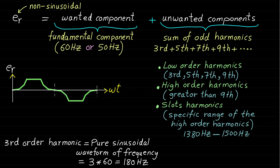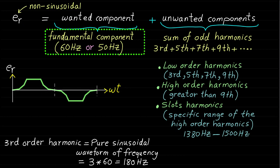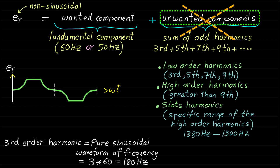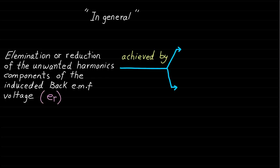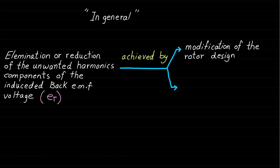We will give more detail about these harmonics during the discussion of the distributed windings. Now, pay attention to this important point. In practice, the armature back EMF induced voltage ER should ideally contain only the fundamental component with a frequency of 60 Hz or 50 Hz. Therefore, the unwanted harmonic components should be eliminated or reduced. In general, this elimination or reduction can be achieved by using two approaches. The first approach, or design freedom, is through modification of the rotor construction design. The second approach, or design freedom, is through the armature windings design.